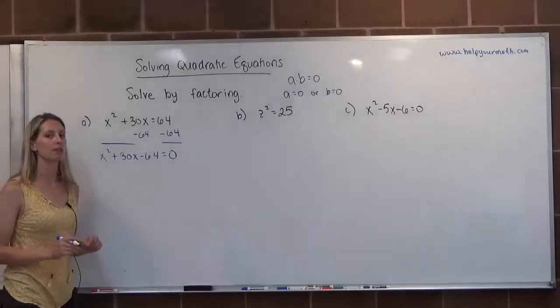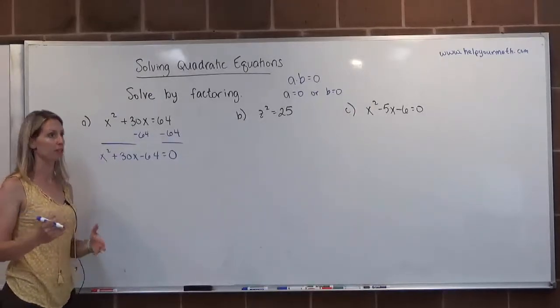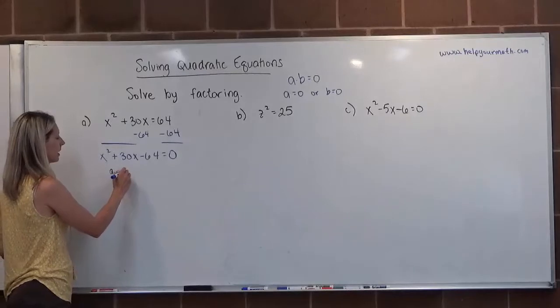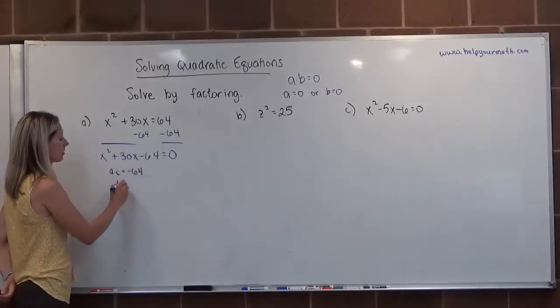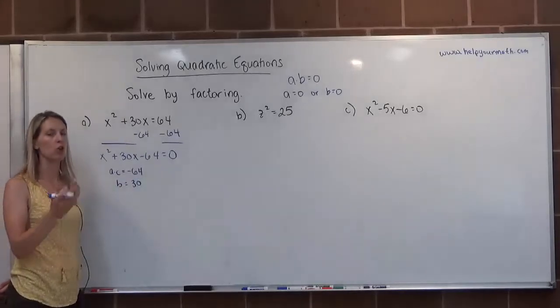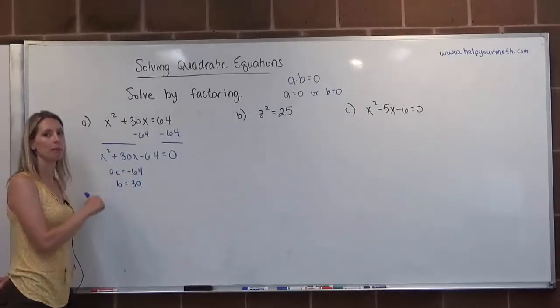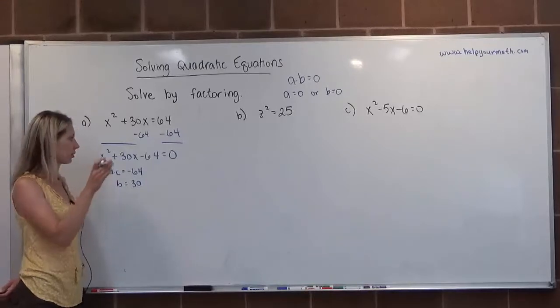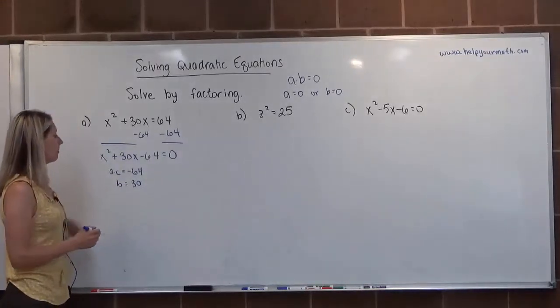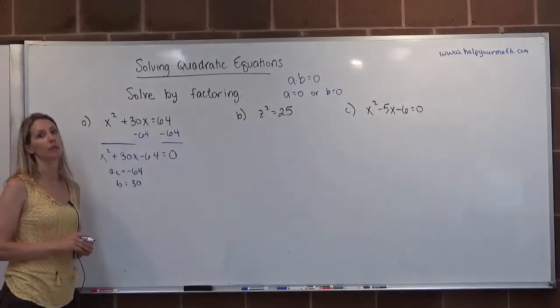Now that it's set equal to zero, now we want to start factoring. So here our target product, a times c would be 1 times negative 64 is negative 64, and our target sum is 30. We can use the shortcut. Once we know the winning combination, we can plug it right into x minus or x plus times x minus or x plus.